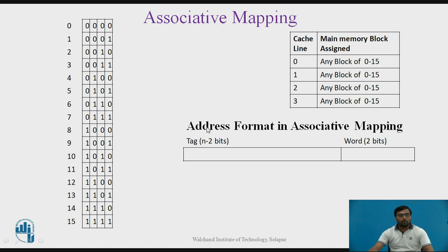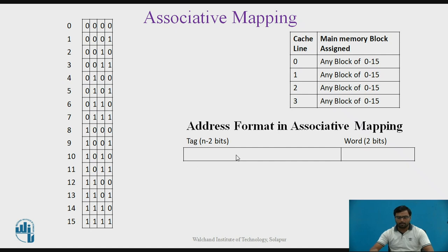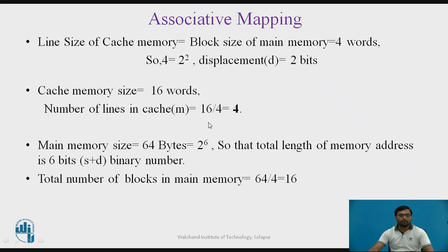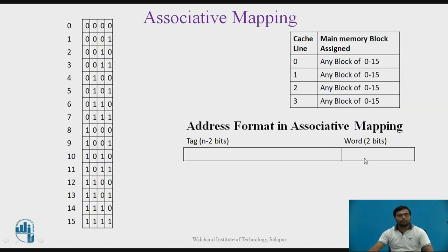In the associative mapping address format, the first 2 least significant bits of the 6-bit address identify a particular word within a block. The remaining 4 MSB bits are used to identify the tag address — that is, the block address. So 2 bits are used for the word address and 4 bits are used to identify the tag number.